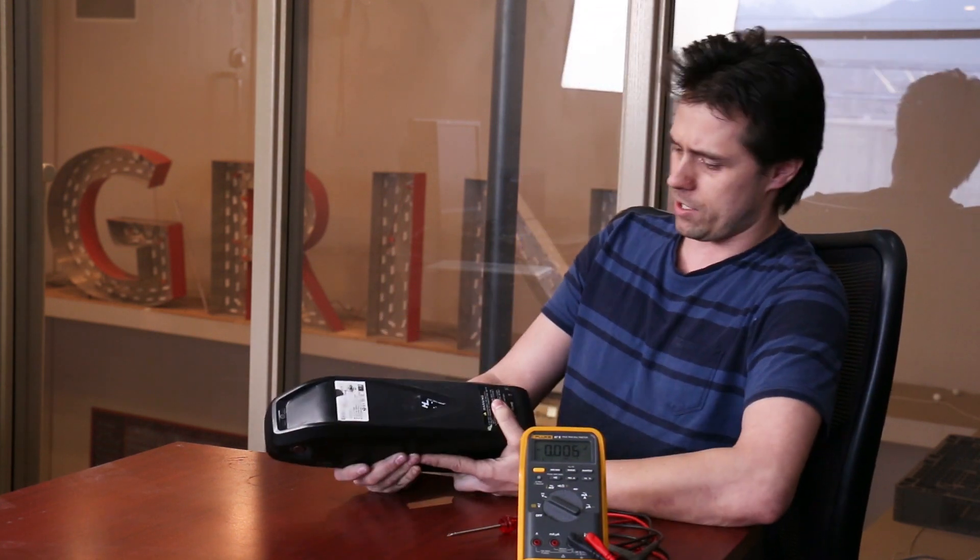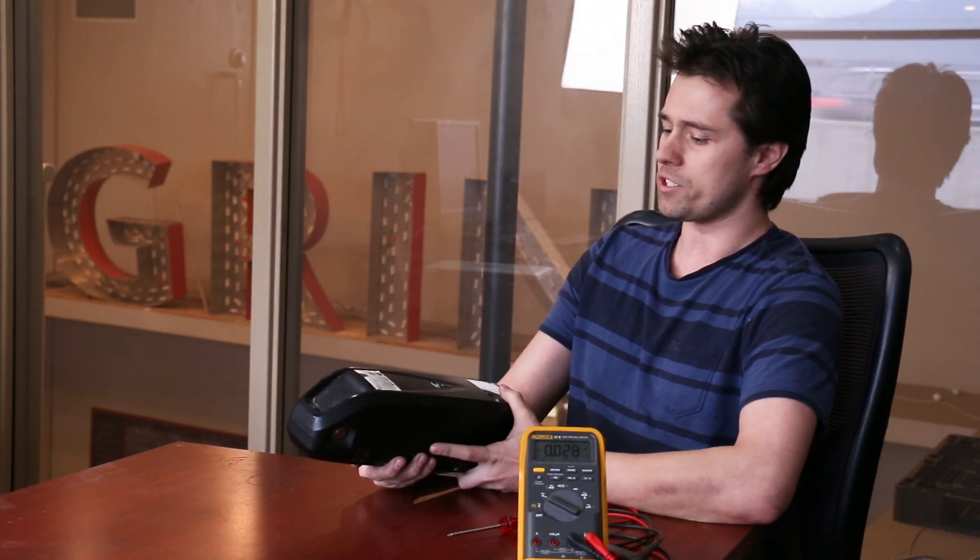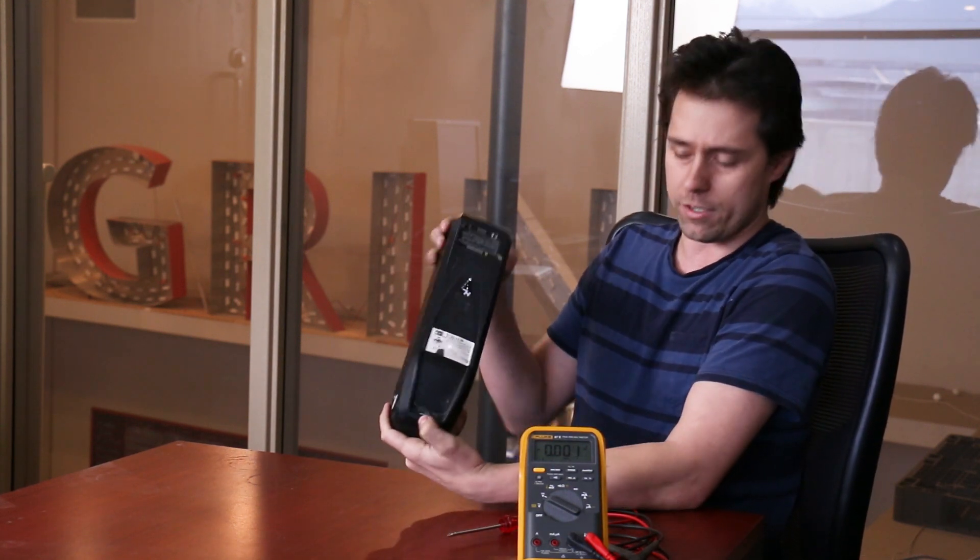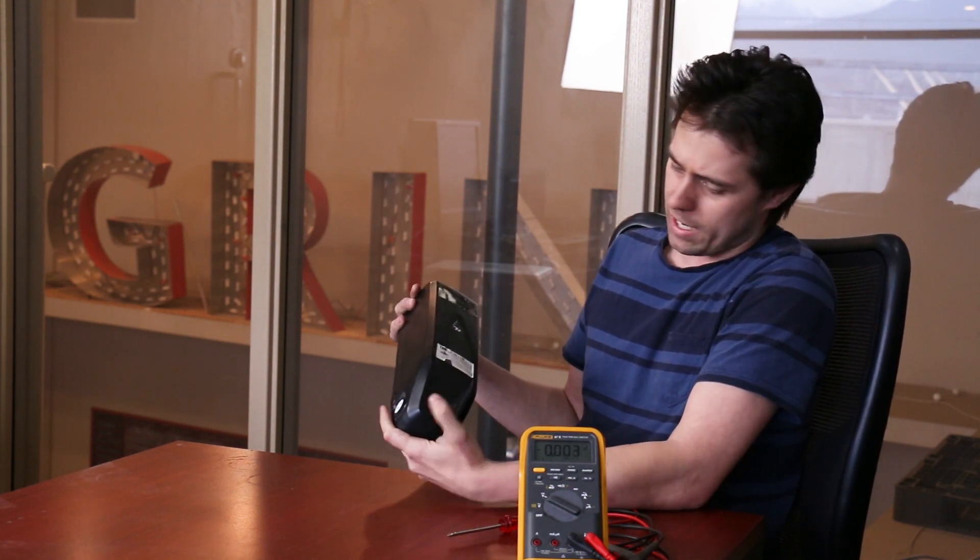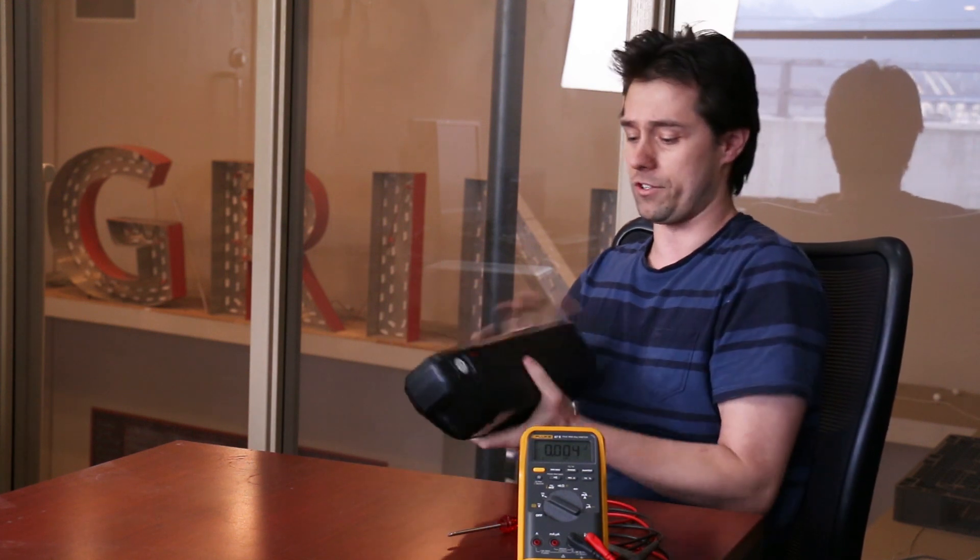Before we actually get inside and take it apart, there's a few things we can check most easily. We've got our voltmeter right on the front, and in this case we have absolutely nothing from that, so let's move on.